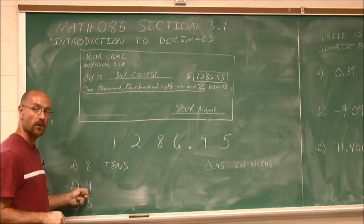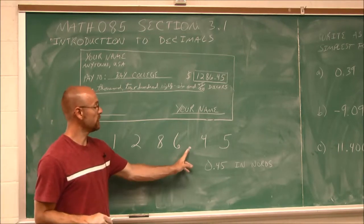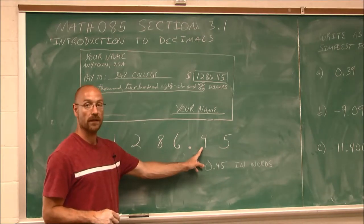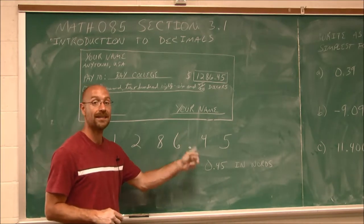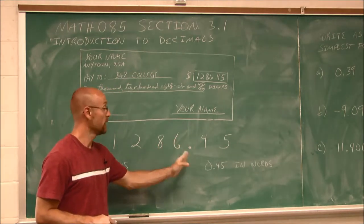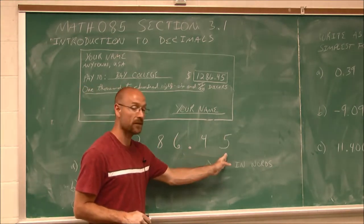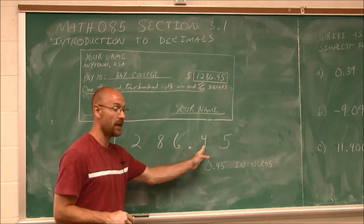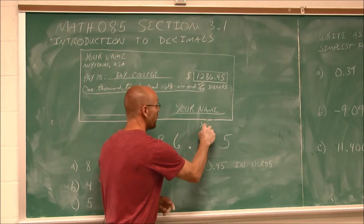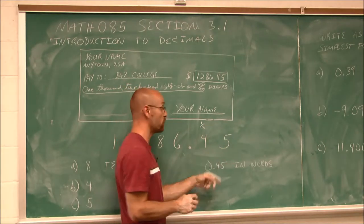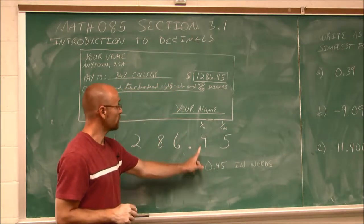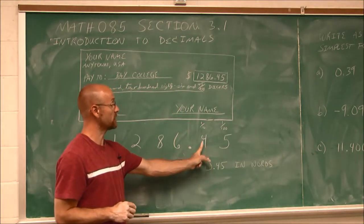What about the 4? The 4 is to the right of the decimal. Every value to the right is an increment of one tenth — it would take 10 of these to make a 1. So if we think of this as being one tenth here, and this is one tenth of one tenth, this would be one one-hundredth.